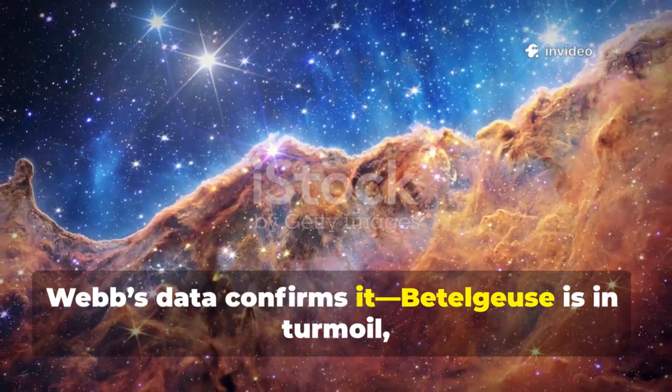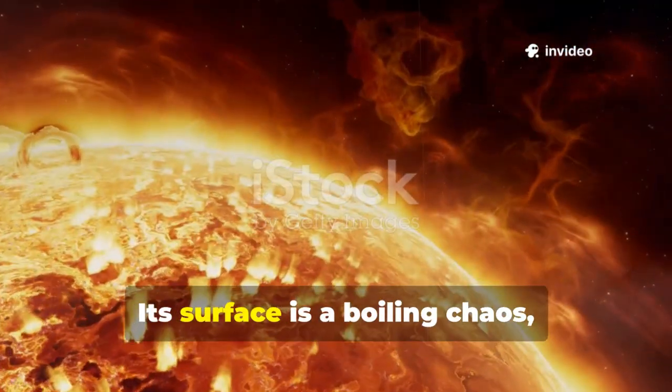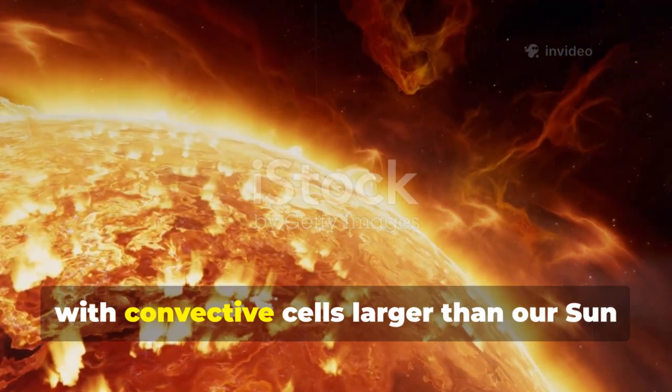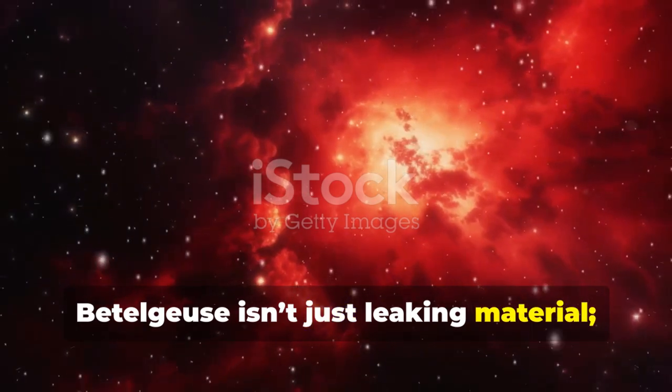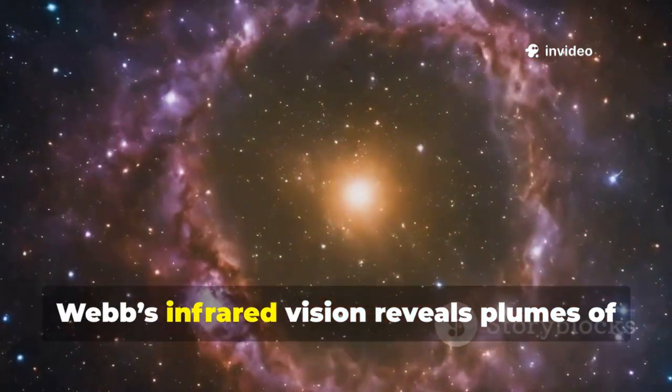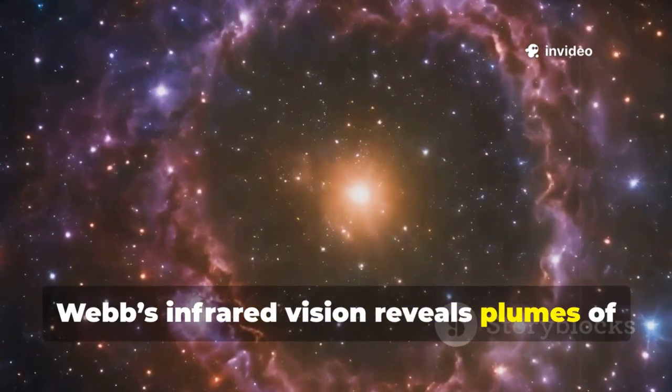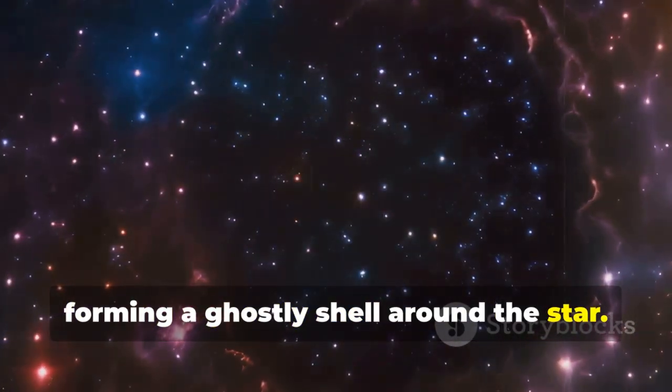Webb's data confirms it. Betelgeuse is in turmoil deep in its twilight years. Its surface is a boiling chaos, with convective cells larger than our sun churning heat outward. Betelgeuse isn't just leaking material, it's shedding its outer layers at a staggering rate. Webb's infrared vision reveals plumes of gas and dust, forming a ghostly shell around the star.